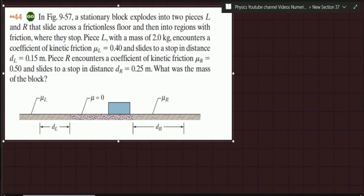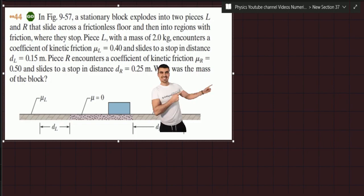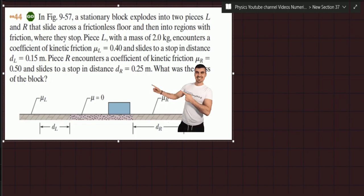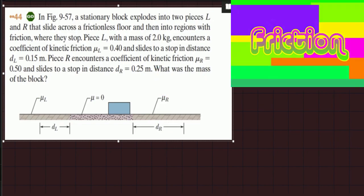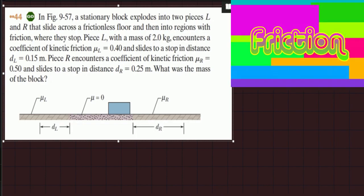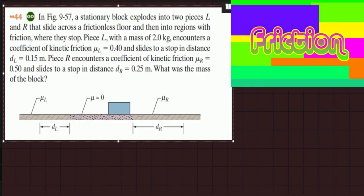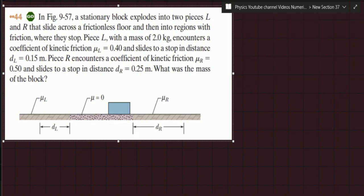Good morning and welcome to this video solution on the topic of linear momentum — specifically, conservation of linear momentum. This question is from Resnick and Halliday. The key word here is 'explosion': a block lying on the floor breaks into two parts after the explosion, and the two parts move left and right respectively, encountering a frictional surface. Due to friction, the separated masses finally stop.